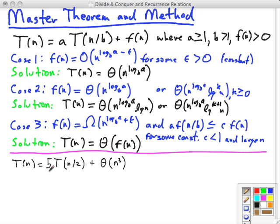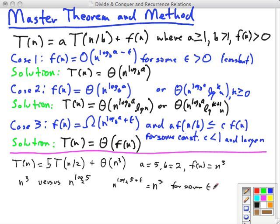Here's another example. We have a equals 5, b equals 2, and f(n) is n cubed. So we need to compare n cubed, again, to n to the log base b of a. Well, this is the flip side of our first example. If we add just a little bit to this, let's say we have n log base 2 of 5 plus some little epsilon, which is going to be constant, that will be n cubed for some epsilon greater than 0 that we can choose. So this potentially falls in case 3 because we have n cubed is omega of n log base 2 of 5 plus some epsilon. But we have to check the regularity condition.